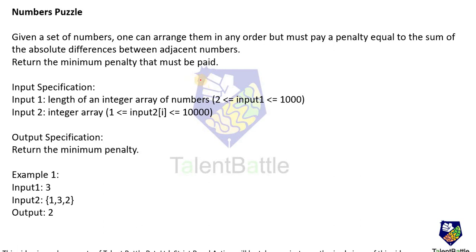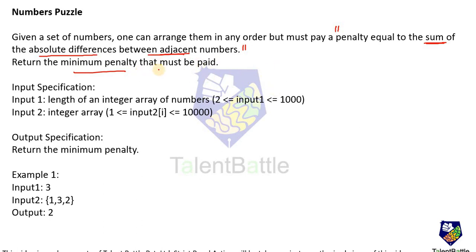Here we will follow the same approach. The question is about a numbers puzzle: given a set of numbers, one can arrange them in any order — there are no restrictions on the arrangement. However, it must pay a penalty equal to the sum of the absolute differences between adjacent numbers. This is our important condition. We have to return the minimum penalty — meaning we calculate the penalty for every possible arrangement and return whichever is the minimum.